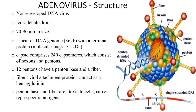The terminal protein has a molecular mass of 55 kilodaltons. The capsid comprises 240 capsomers consisting of hexons and pentons. There are 12 pentons, each having a penton base and a fiber. The fiber, which is the viral attachment protein, can act as a hemagglutinin. The penton base and fiber are toxic to the cell and carry type-specific antigens.